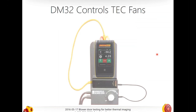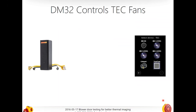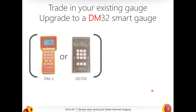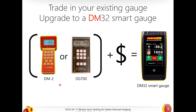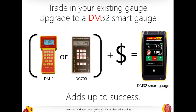For those of you using DG700s — you can actually run any Energy Conservatory fans using a DM32 with what's called a speed control adapter. So you don't have to make a big investment or buy a bunch of new equipment. And up until the end of this year, we will be taking trade-ins — DM2 or DG700 — and applying that trade-in value towards your DM32 smart gauge. For pricing, go to RetroTech.com and talk to the sales team.